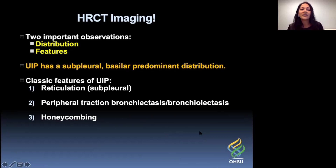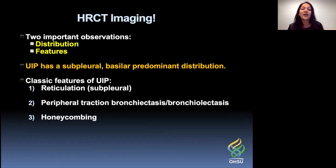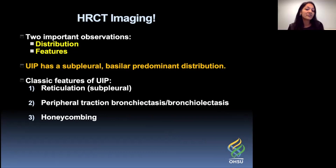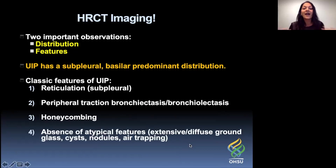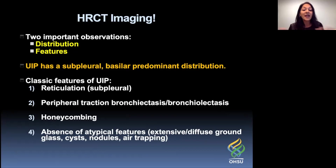You'll also see honeycombing, which pathologically is suspected to represent the end stage of traction bronchiectasis. In honeycombing, you see multiple clustered cysts often ranging in size from 2 to 10 millimeters with very well-defined walls approximately 1 to 3 millimeters in thickness. Finally, the last classic feature is actually an absence of atypical features — absence of diffuse ground glass opacification, scattered thin-walled cysts, nodules, air trapping, or any finding that's atypical.